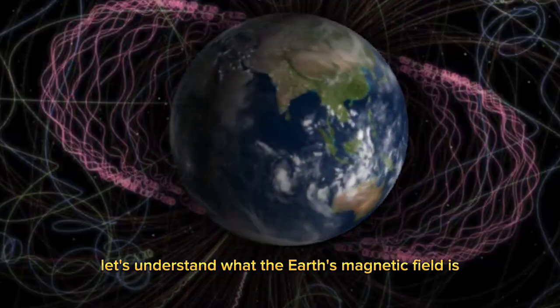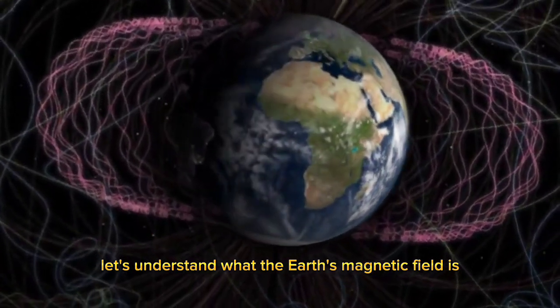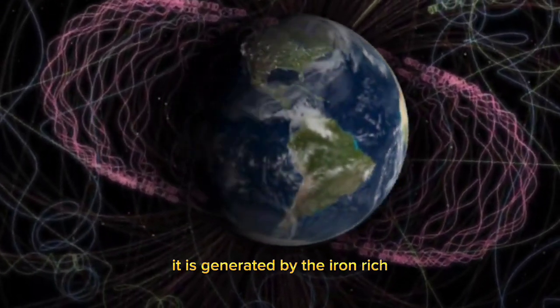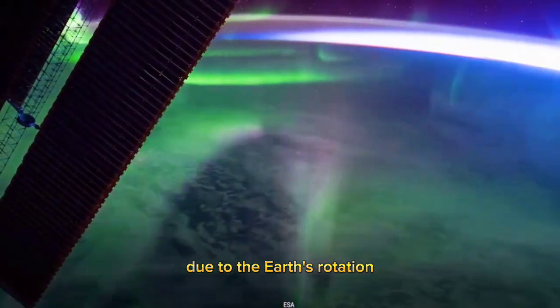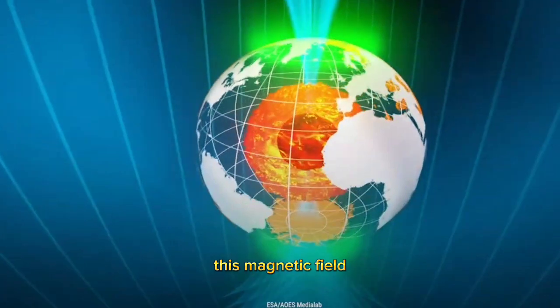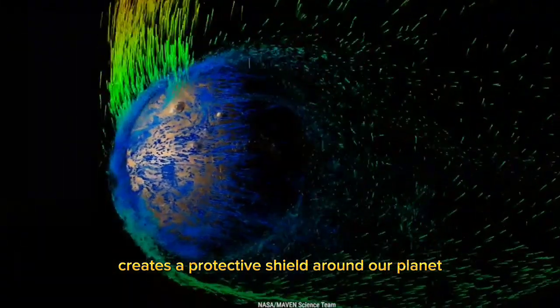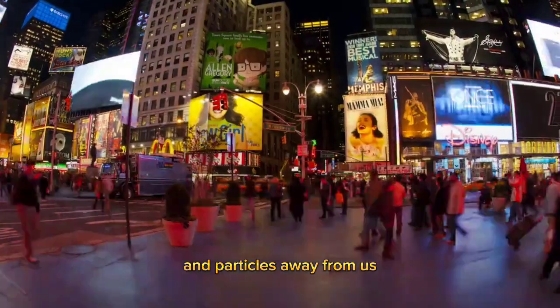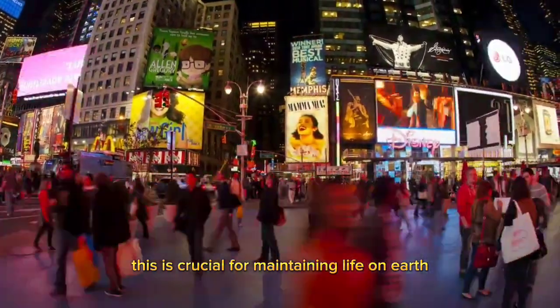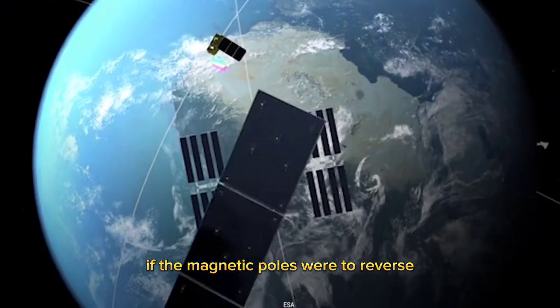First, let's understand what the Earth's magnetic field is. It is generated by the iron-rich liquid outer core, which is constantly in motion due to the Earth's rotation. This magnetic field creates a protective shield around our planet, deflecting harmful solar radiation and particles away from us. This is crucial for maintaining life on Earth.